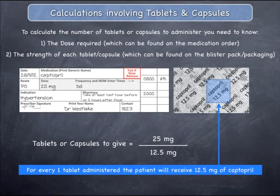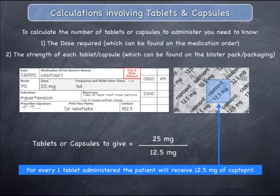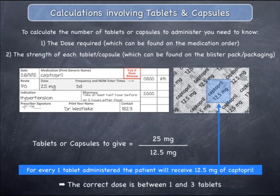Before actually calculating the number of tablets or capsules to administer, it is good practice to estimate the answer. You can do this by considering the strength of the medication and the dose required. A strength of 12.5 milligrams per tablet means a patient will receive 12.5 milligrams of Captopril for every one tablet administered. Three tablets would result in a dose of 3 times 12.5 milligrams, which is 37.5 milligrams — more than the 25 milligrams required. As such, you therefore know that the correct dose is between one and three tablets.